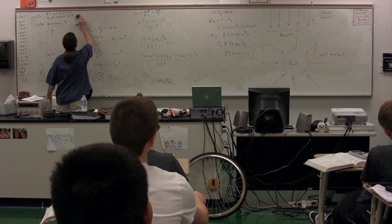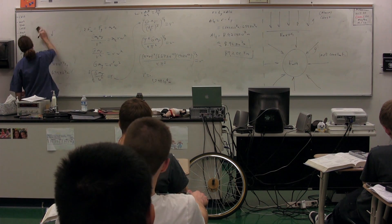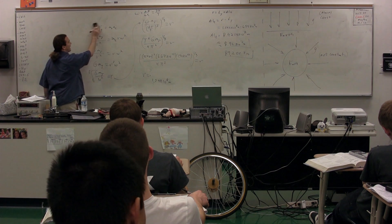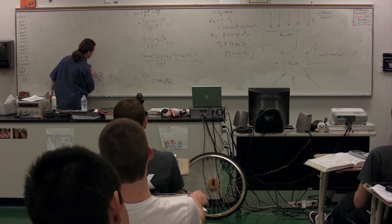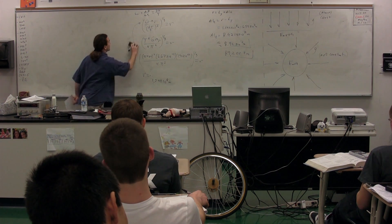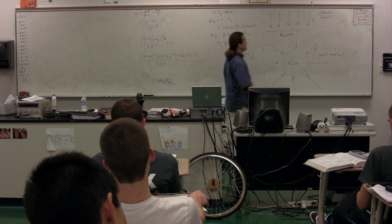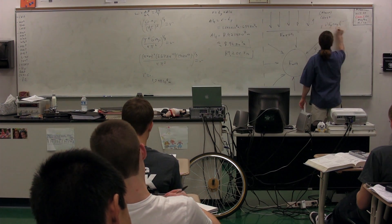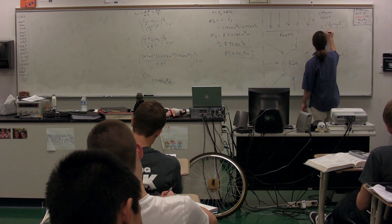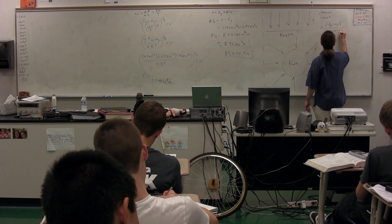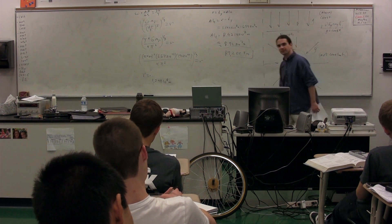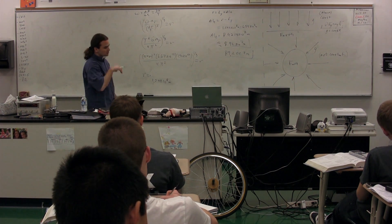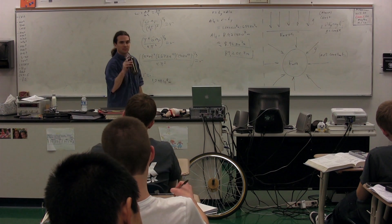In terms of gravitational potential energy, we have actually only dealt with one of those situations — the one where we have a constant gravitational field. The only gravitational potential energy we have figured out so far is PE sub g equals mgh. Note, this one requires a constant gravitational field. Today we're going to figure out how to deal with gravitational potential energy when you do not have a constant gravitational field.